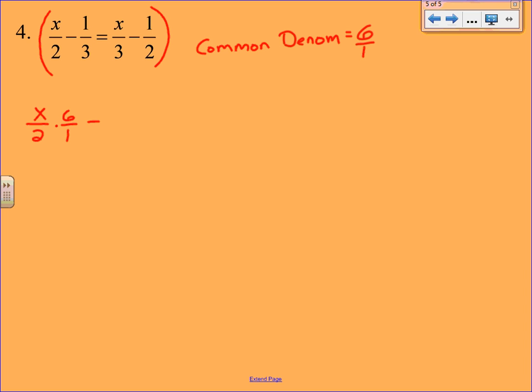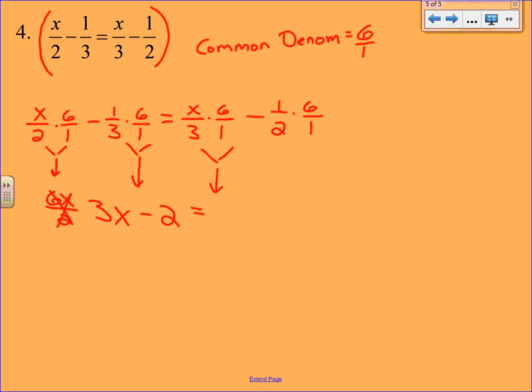So I have x over 2 times 6 over 1 minus 1 over 3 times 6 over 1 equals x over 3 times 6 over 1 minus 1 over 2 times 6 over 1. Now you multiply straight across with fractions but please cross cancel. In our first one here it would be like 6x over 2 but then reduce that right away. That is actually 3x. Our next group of terms would be 6 over 3 but that's going to reduce to 2. So just write minus 2. The next group of terms would be 6x over 3 but that reduces to 2x. And then lastly we would end up with 6 over 2 but that reduces to 3. And the minus sign has to come along. Don't lose your negatives here as you're simplifying.